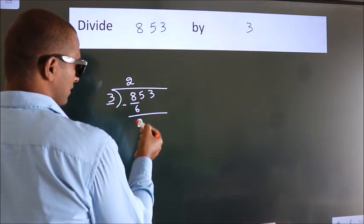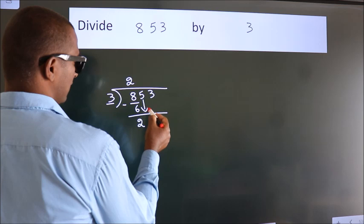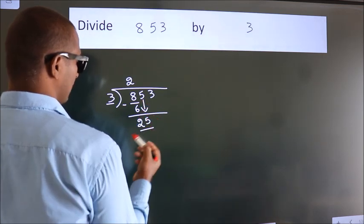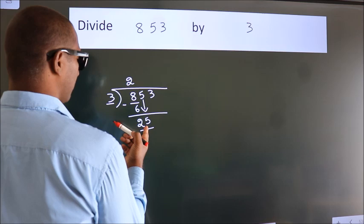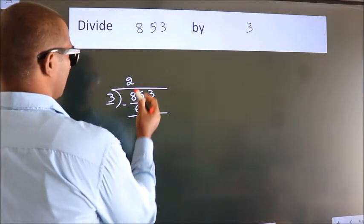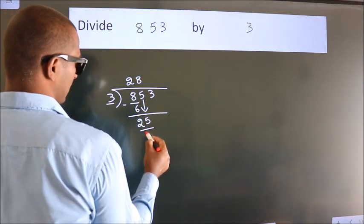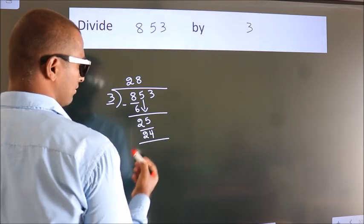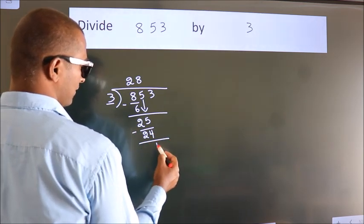After this bring down the beside number. So 5 down. So 25. A number close to 25 in 3 table is 3 times 8 is 24. Now we subtract. We get 1.